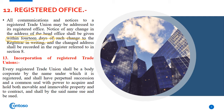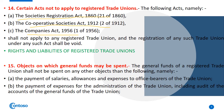Regarding the movable and immovable properties, contracts, and incorporation of the trade union — let us see Section 14. It says certain acts are not to apply to registered trade unions.